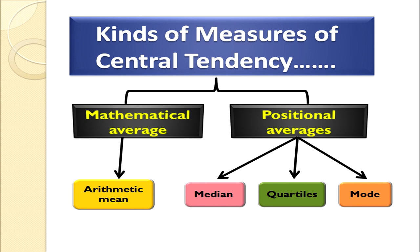Once we know the meaning of central tendency, we can discuss different kinds of measures. Basically there are two kinds: mathematical average and positional average. In mathematical averages, we compute the arithmetic mean. In positional averages, we calculate median, quartiles, and mode. Today our class will focus on arithmetic mean in individual, discrete, and continuous series.